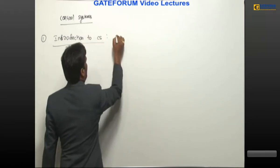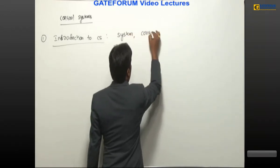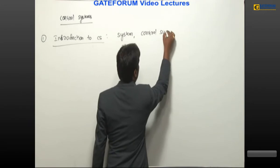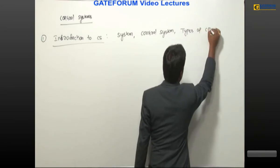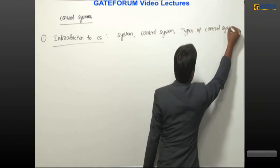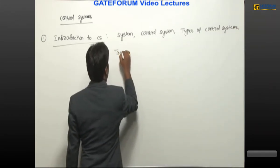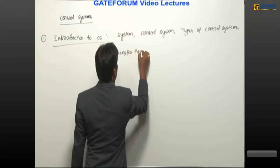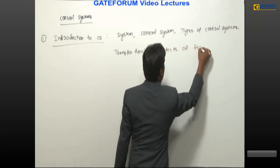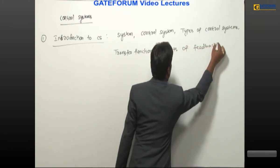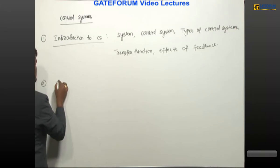In unit one we have to discuss what is meant by system, what is meant by control system, then types of control system, next transfer function, and finally effects of feedback. All these things will make clear the basics of the subject.